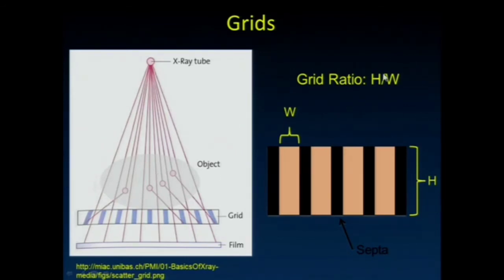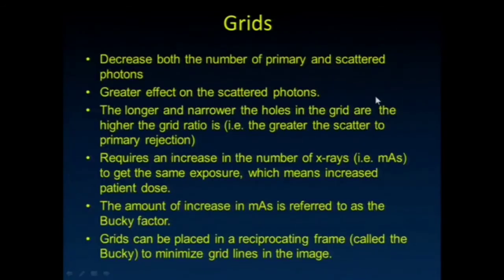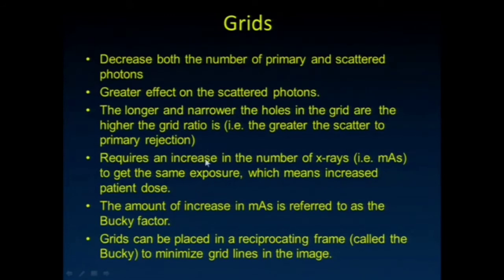The grid ratio is the height of the holes divided by the width of the holes. Grids decrease both primary and scatter transmission, but have a greater effect on scatter. The longer and narrower the holes, the more rejection they provide. Grids always require an increase in the number of x-rays because fewer x-rays reach the detector.